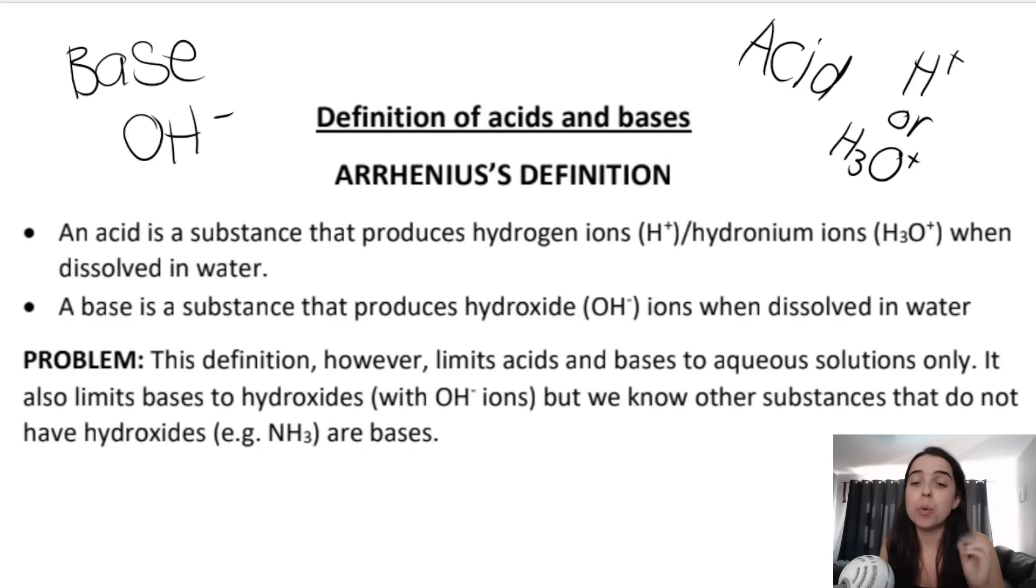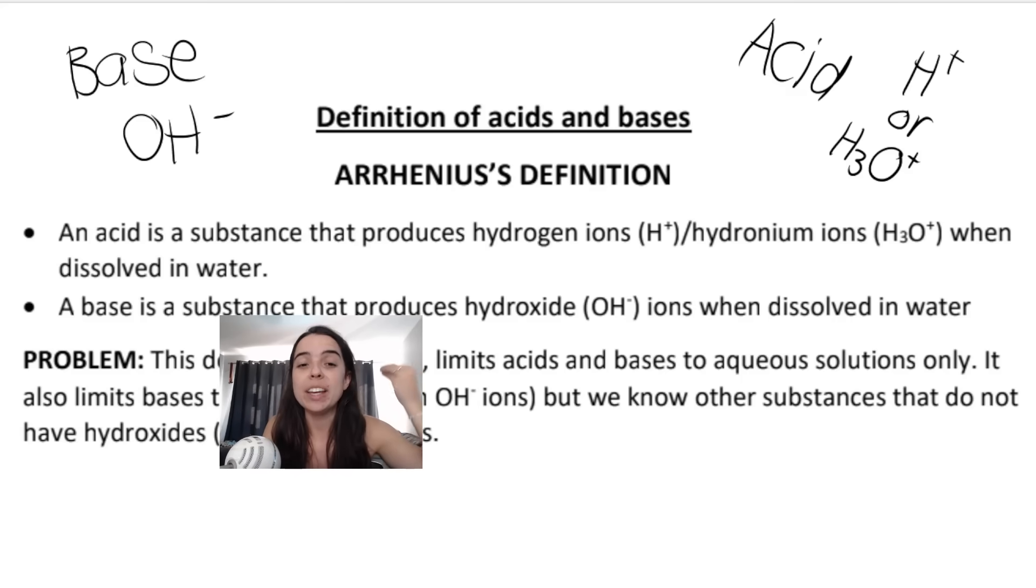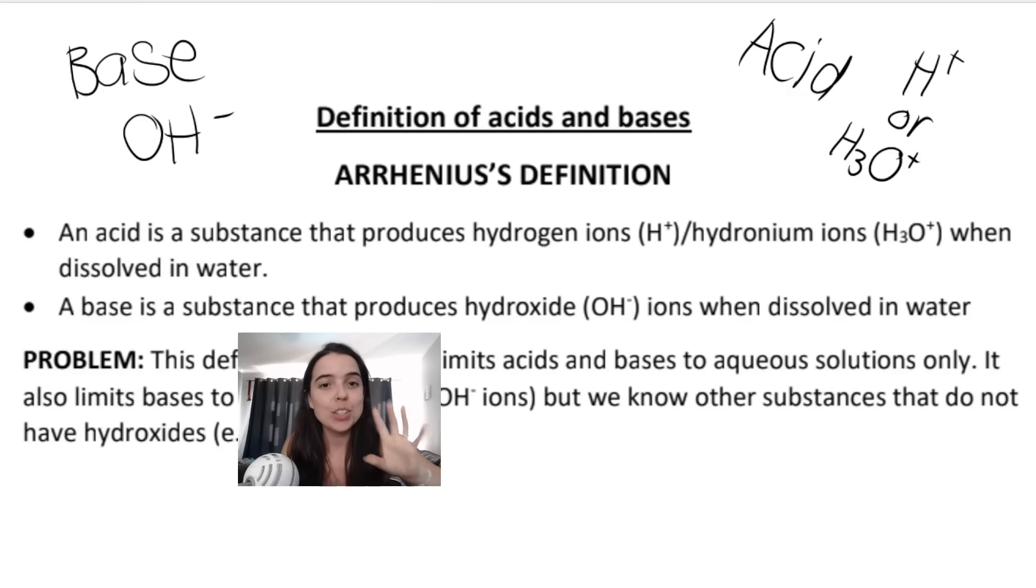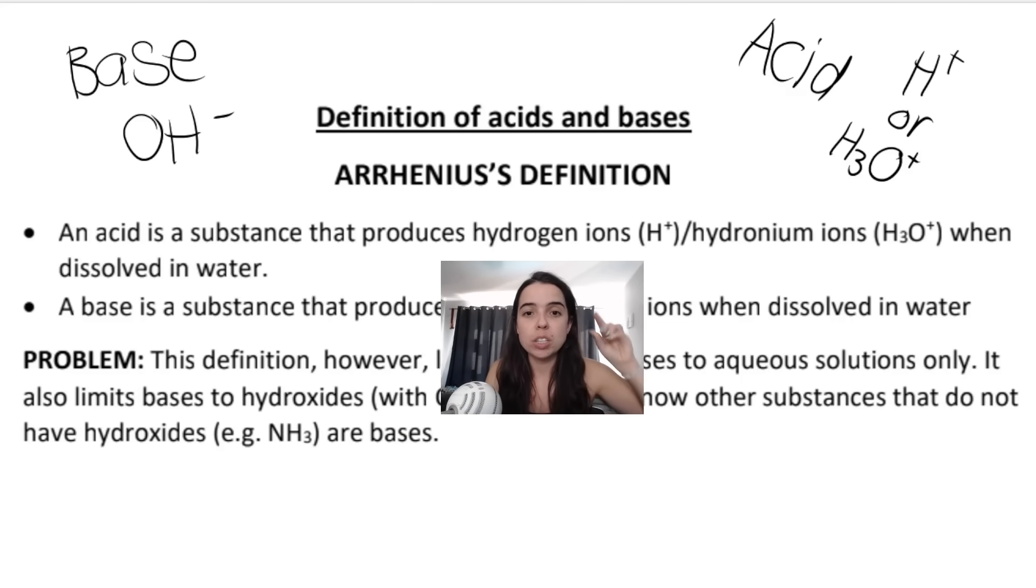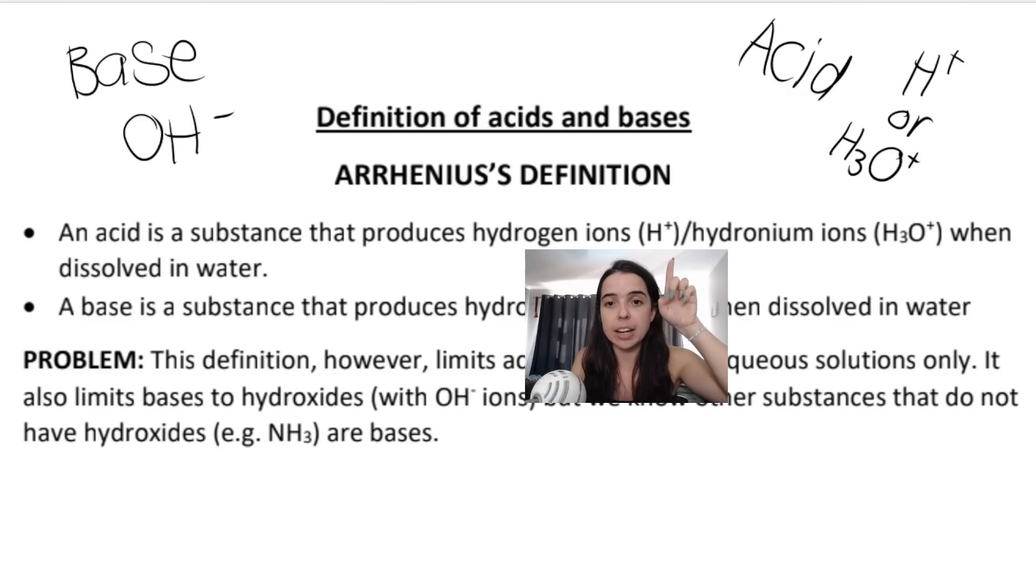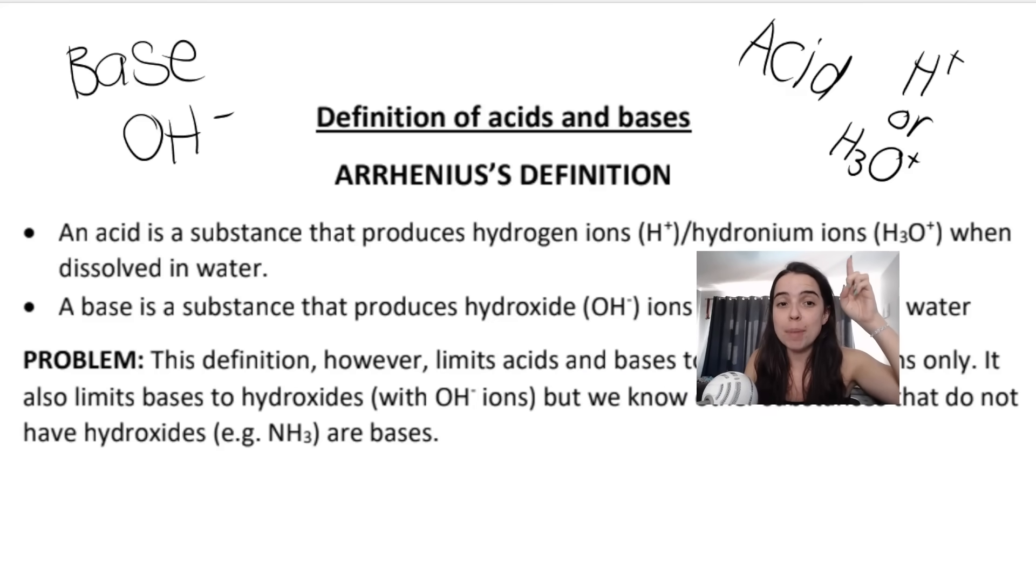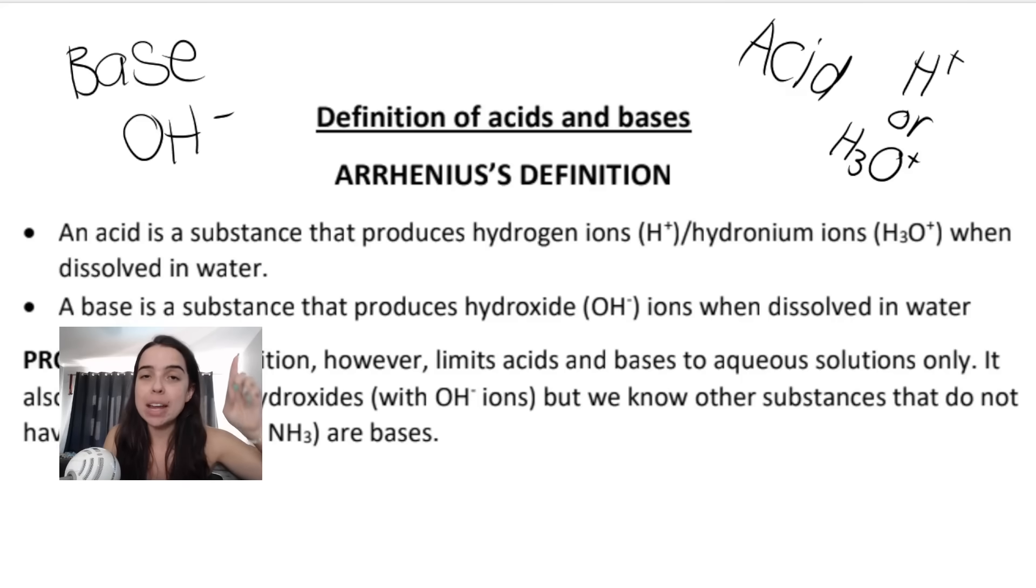Remember I told you there were two ways we can define acids and bases. The first is called the Arrhenius definition. You do need to know this as we can ask this as a definition. Arrhenius defined an acid as a substance that produces hydrogen ions, H+ or hydronium ions, when dissolved in water.